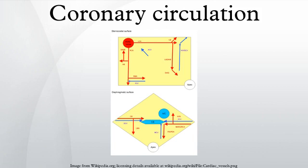Coronary circulation is the circulation of blood in the blood vessels of the heart muscle. The vessels that deliver oxygen-rich blood to the myocardium are known as coronary arteries. The vessels that remove the deoxygenated blood from the heart muscle are known as cardiac veins.